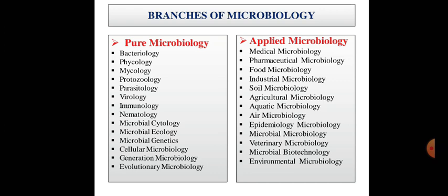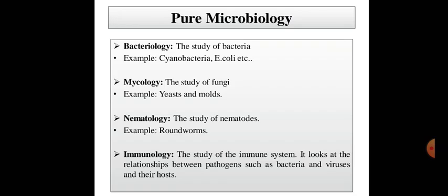The last branch listed is environmental microbiology. The first branch of pure microbiology is bacteriology — the study of bacteria. Examples include cyanobacteria and E. coli.